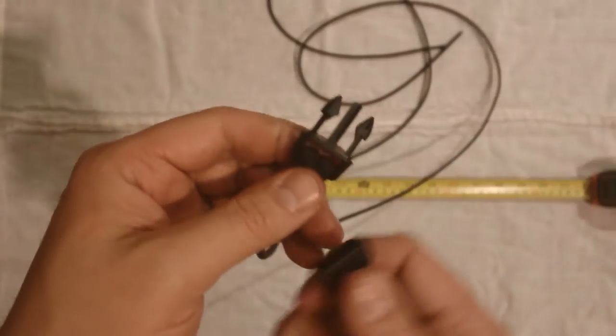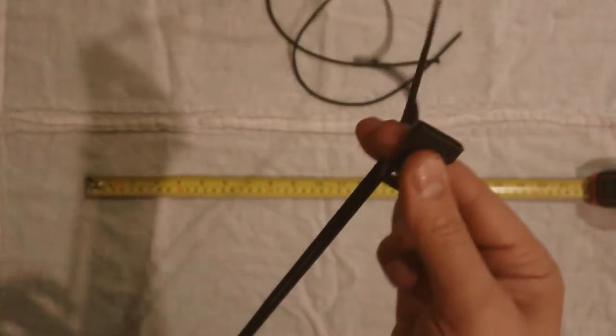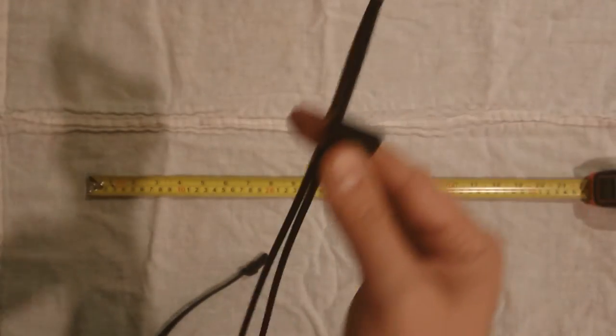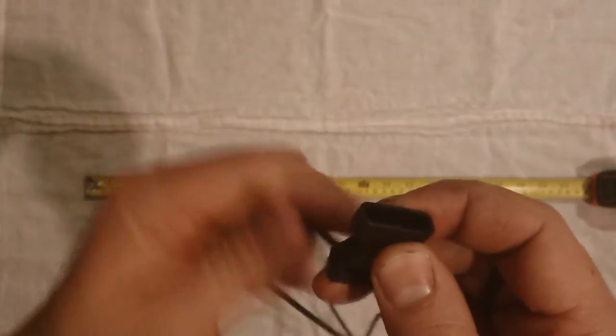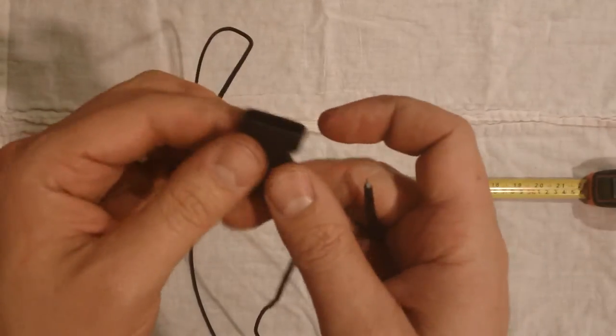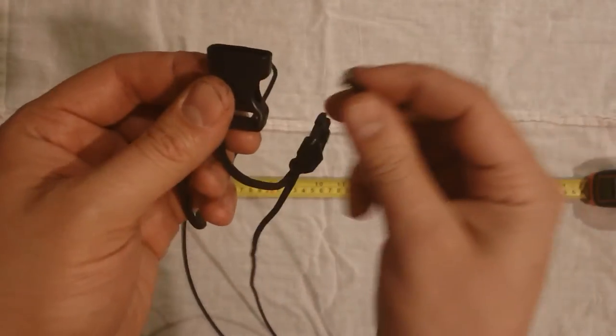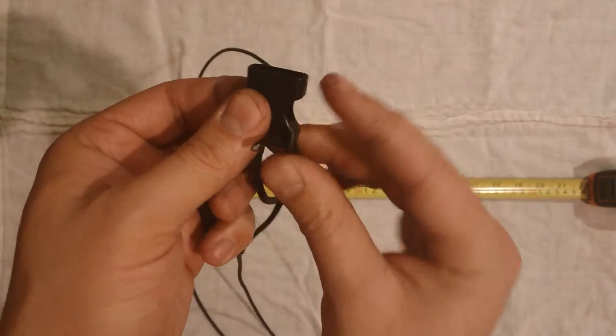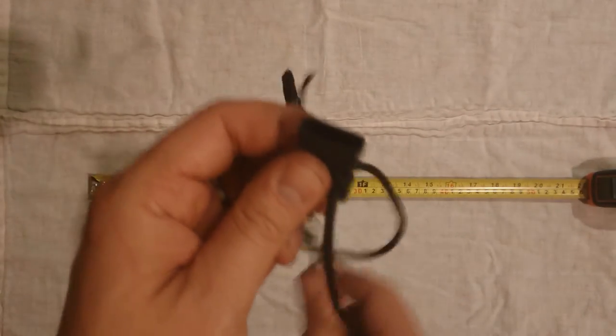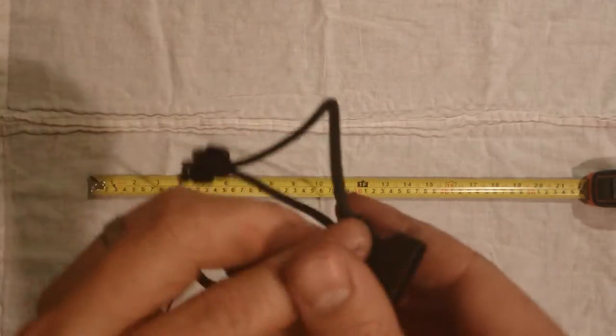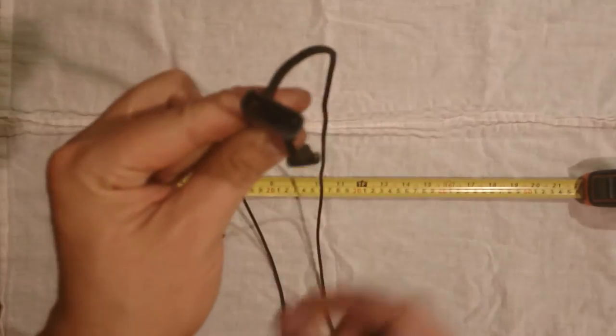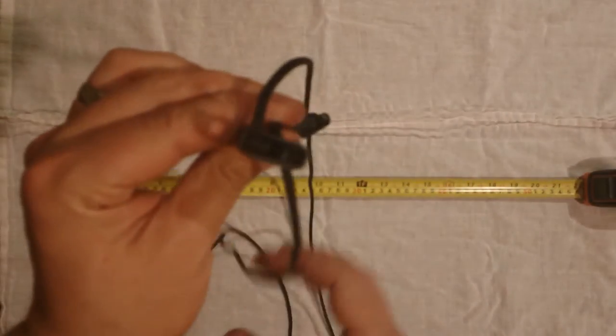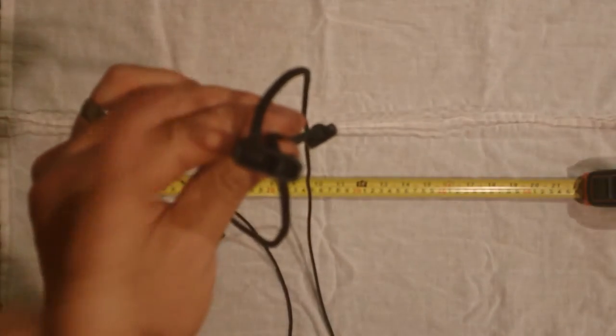Then I'll take this off and I'll take one end and put it away from me so it goes through. Then I'll take the other end and I'll bring it in towards me. When you put them all through, it should look like that where one end is facing this way and the other end is facing that way.